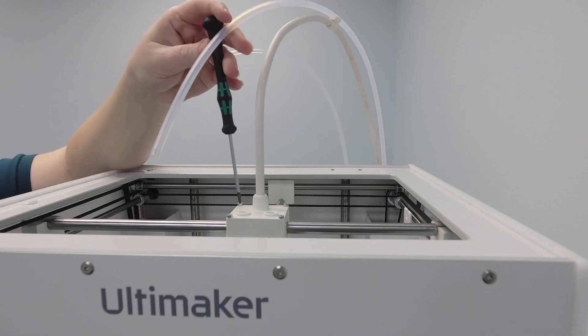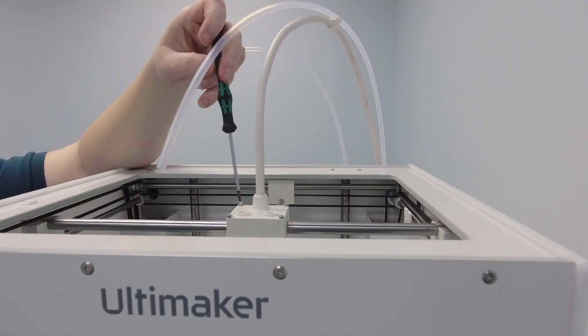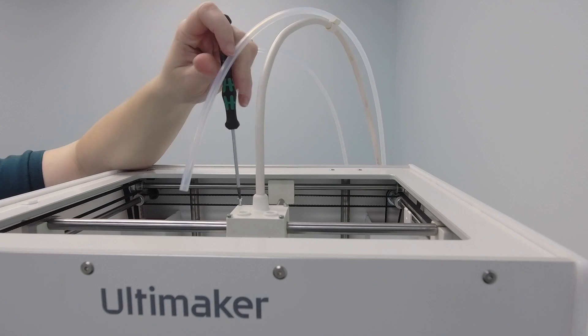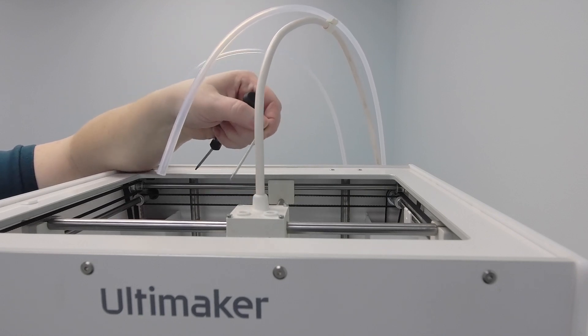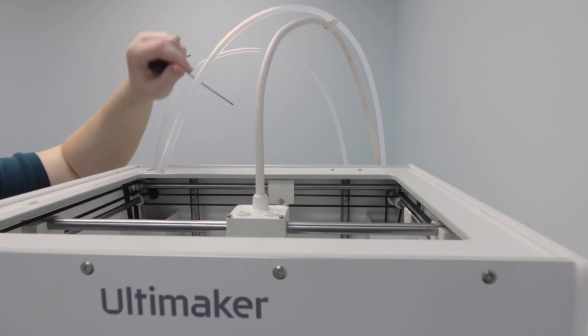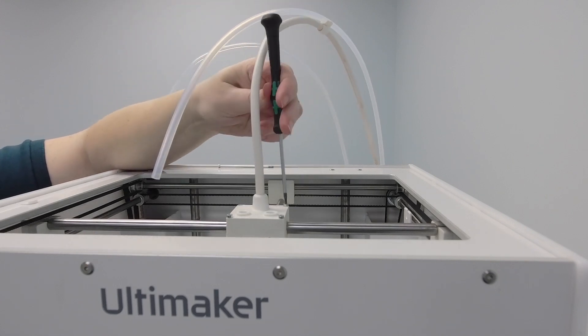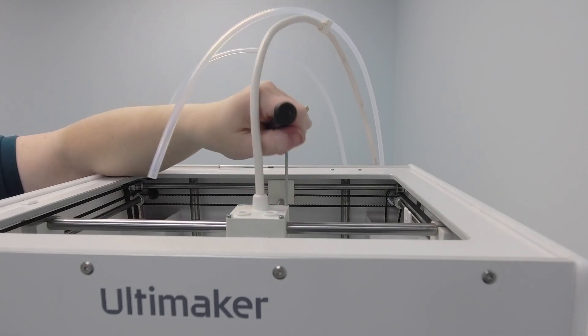Next, you'll want to unscrew the two back screws from the top of the printhead. As you can see, there's only a very small threaded portion on this screw. Go ahead and complete the other screw as well and set both of these aside.